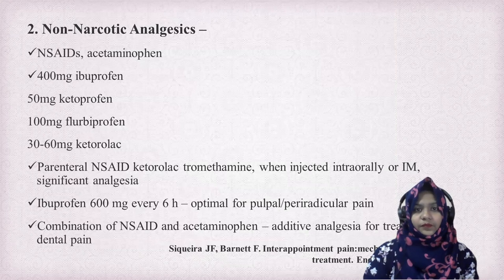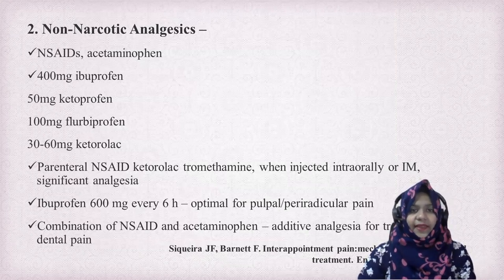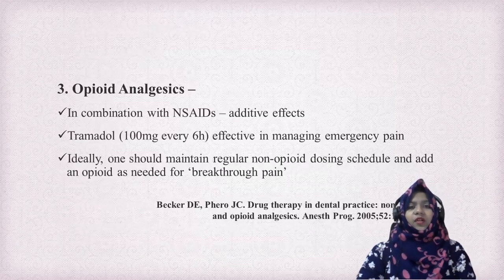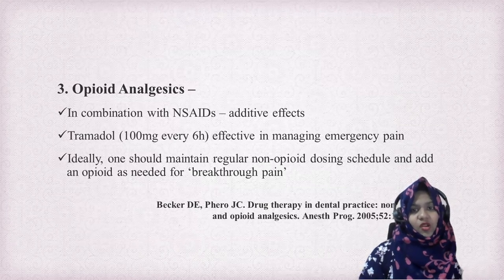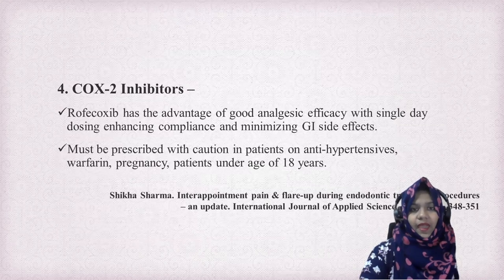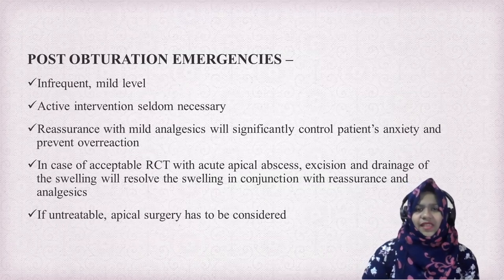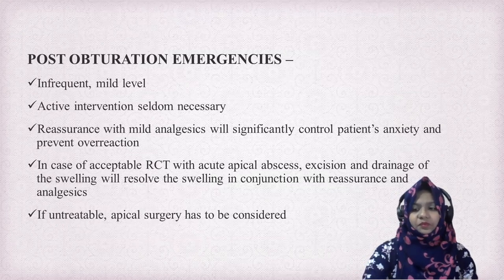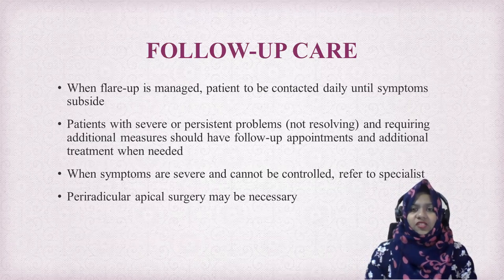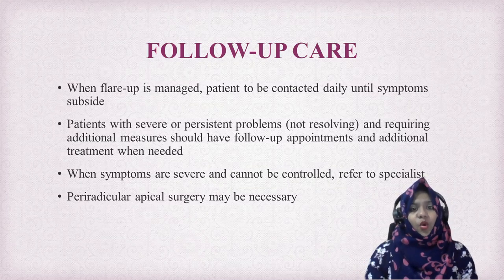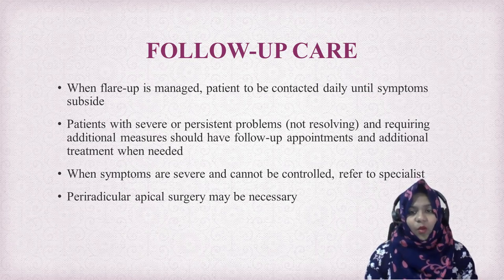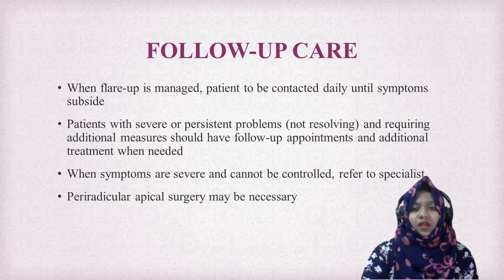Non-narcotic analgesics such as NSAIDs, acetaminophen, ibuprofen, and ketoprofen are all helpful in treatment of inter-appointment flare-up. If the flare-up is very severe, opioid analgesics come into play; tramadol is very effective in managing emergency pain. COX-2 inhibitors have been discussed theoretically but are not used nowadays. In post-obturation emergencies at a very mild level, active intervention is seldom necessary; reassurance with mild analgesics will help. When the flare-up is managed, the patient should be followed up until symptoms subside. Patients with severe or persistent problems should have follow-up appointments and additional treatment whenever needed. If not resolved, periapical surgery should be considered.